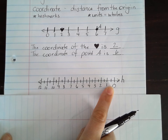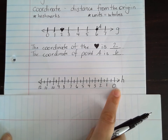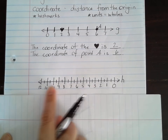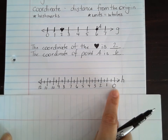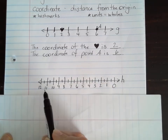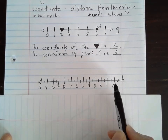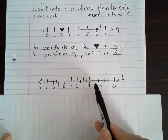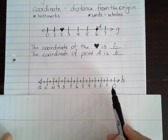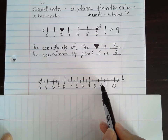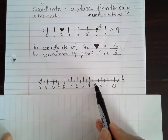This number line is going from right to left, but still going from least to greatest right to left. We have 12 whole units, but what do you think my hash marks are counting by? Yes — it is halves. So this would be one-half, one, one and a half, two, two and a half, three, three and a half, four, four and a half, five, and so on.